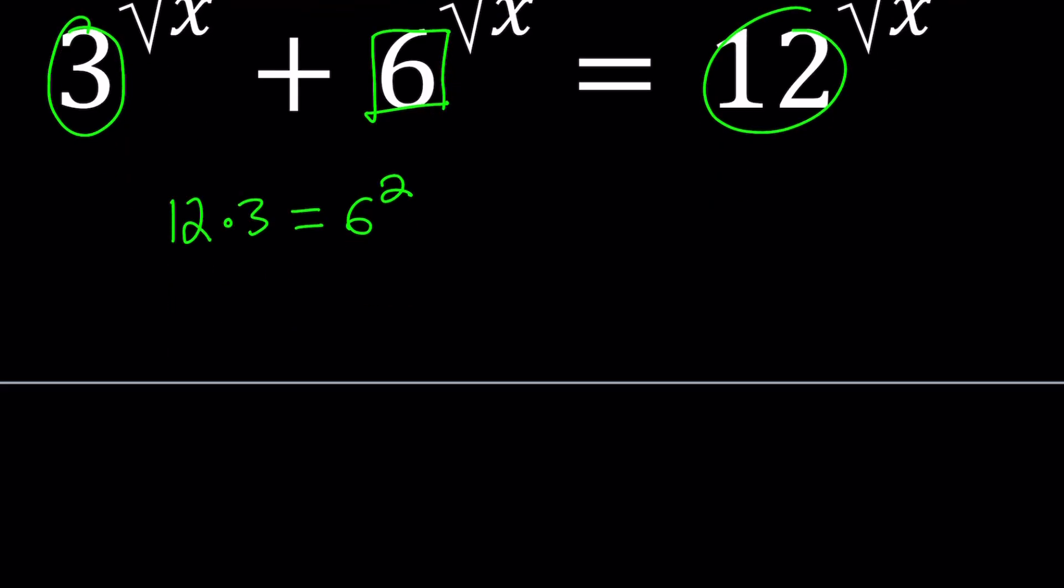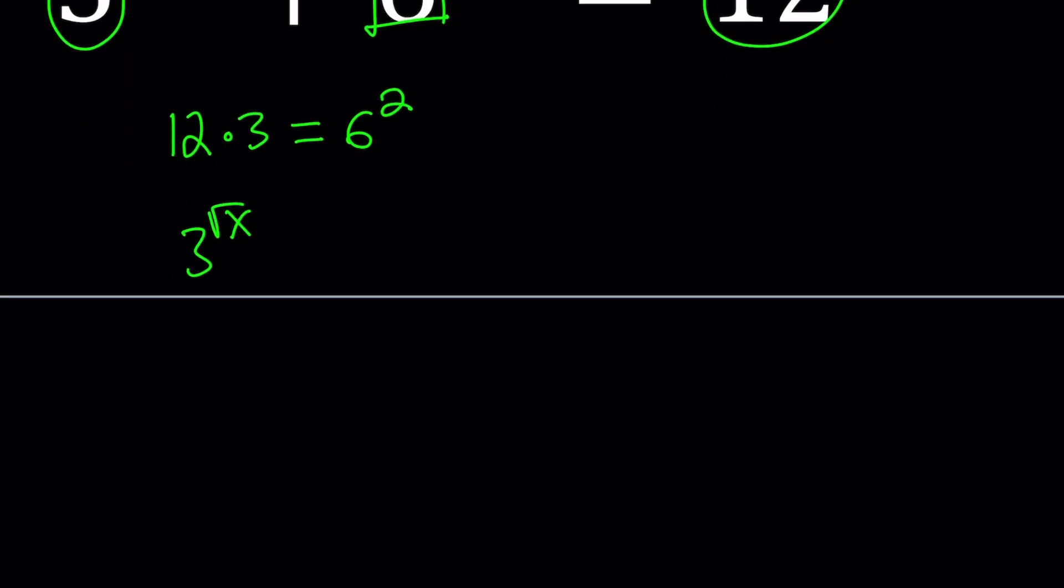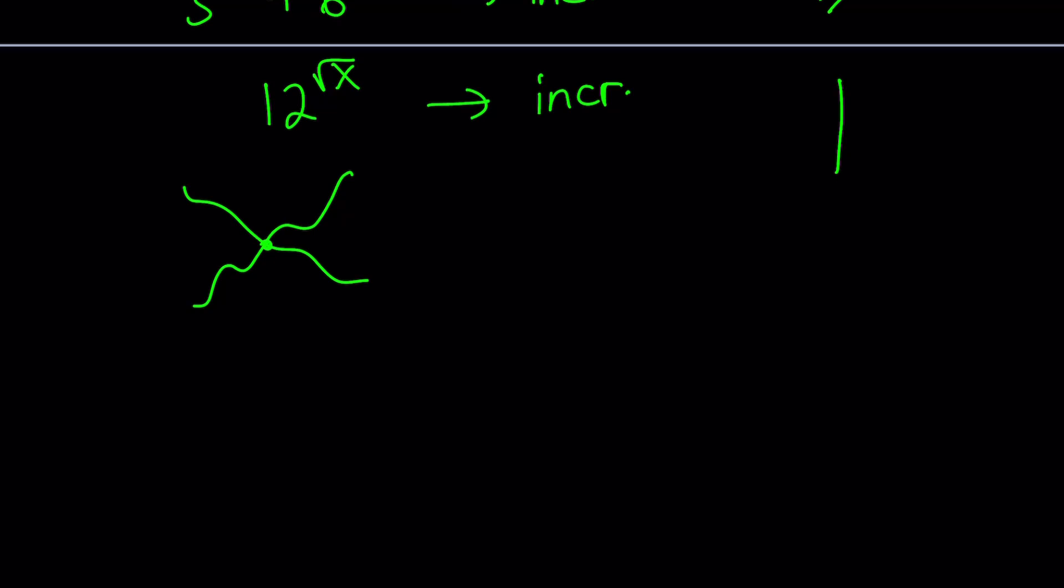First of all I noticed that when I look at either side, 3 to the square root of x plus 6 to the square root of x is an increasing function. Because as x increases y is going to increase. Of course we have a limitation here. X needs to be greater than or equal to 0. Obviously this function is only going to appear to the right of the y-axis. And then the same thing goes for 12 to the power square root of x. That's also going to be an increasing function. So we have two increasing functions equal to each other.